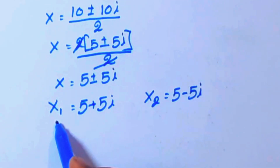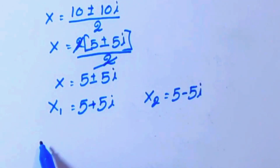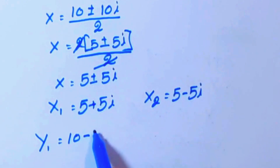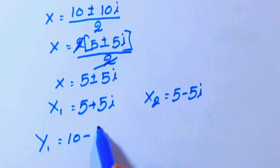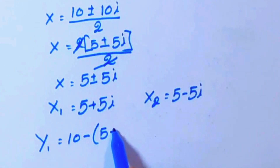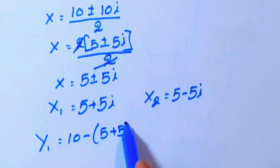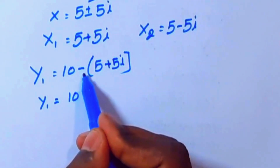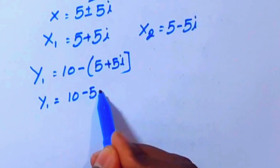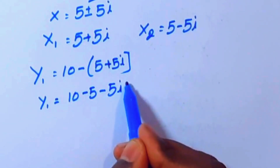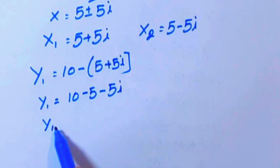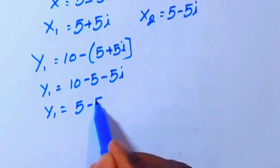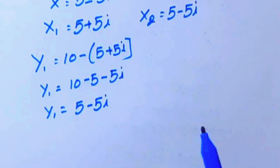Now we are going to substitute these values into equation 3. For y1, substituting x1: y1 equals 10 minus (5 plus 5i). Distributing the minus sign: y1 equals 10 minus 5 minus 5i. So y1 equals 5 minus 5i.